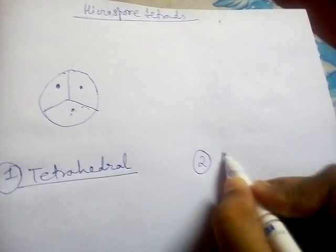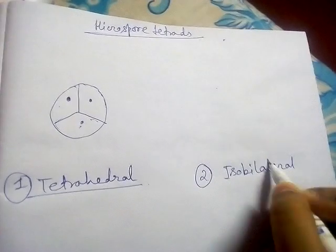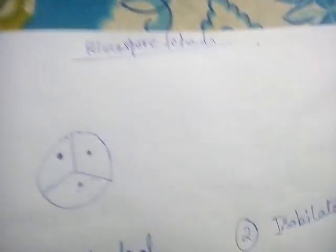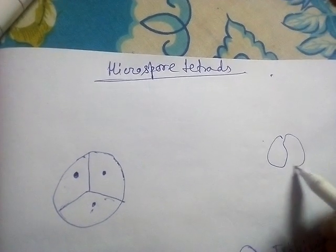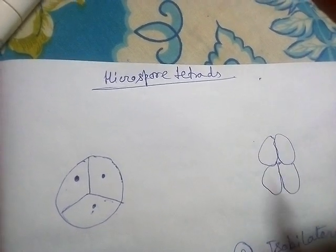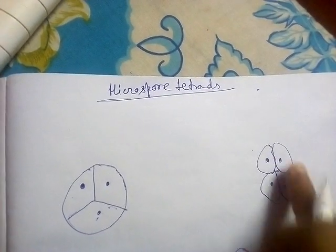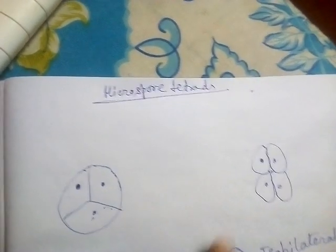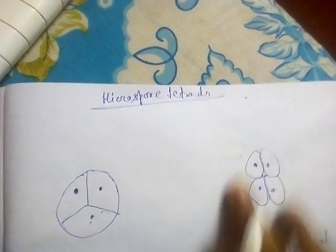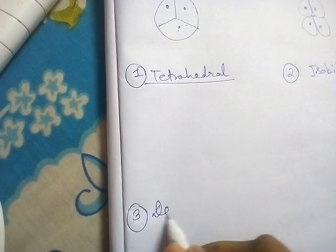The second type is known as the isobila teral form. In the case of isobila teral, all four microspores are arranged in a flat plane — first, second, third, and fourth. All four microspores are arranged in this way; it is the isobila teral form.